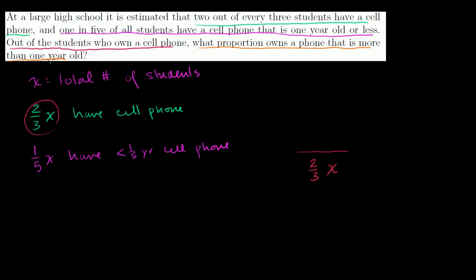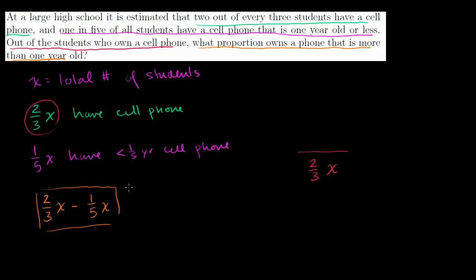The number of students with a cell phone more than 1 year old equals the total with a cell phone minus those with a new phone. That's 2/3 x minus 1/5 x. The denominator is all students who own a cell phone, which is 2/3 x. So we're looking at: (2/3 x minus 1/5 x) over (2/3 x) — the number with an older phone out of all phone owners.